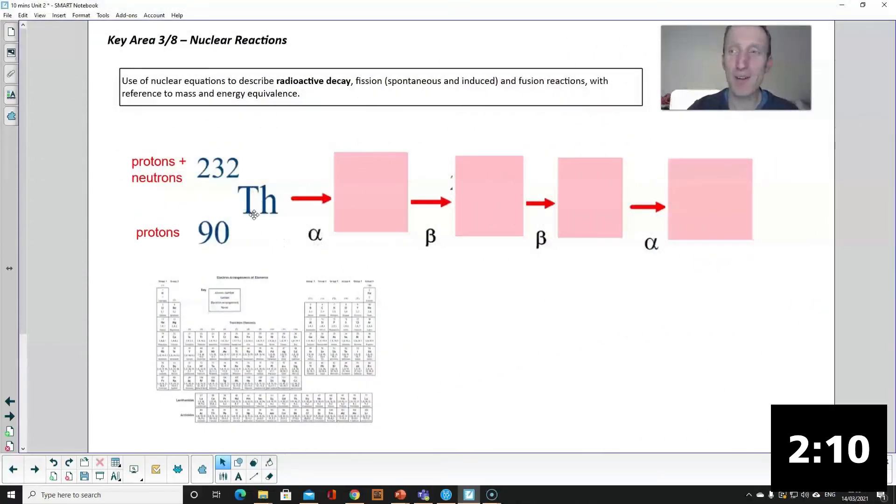Okay a bit of chemistry. So for every element there is a number at the bottom called the atomic number that's the number of protons in the nucleus and that identifies the element so that's the number you're looking for on your periodic table.